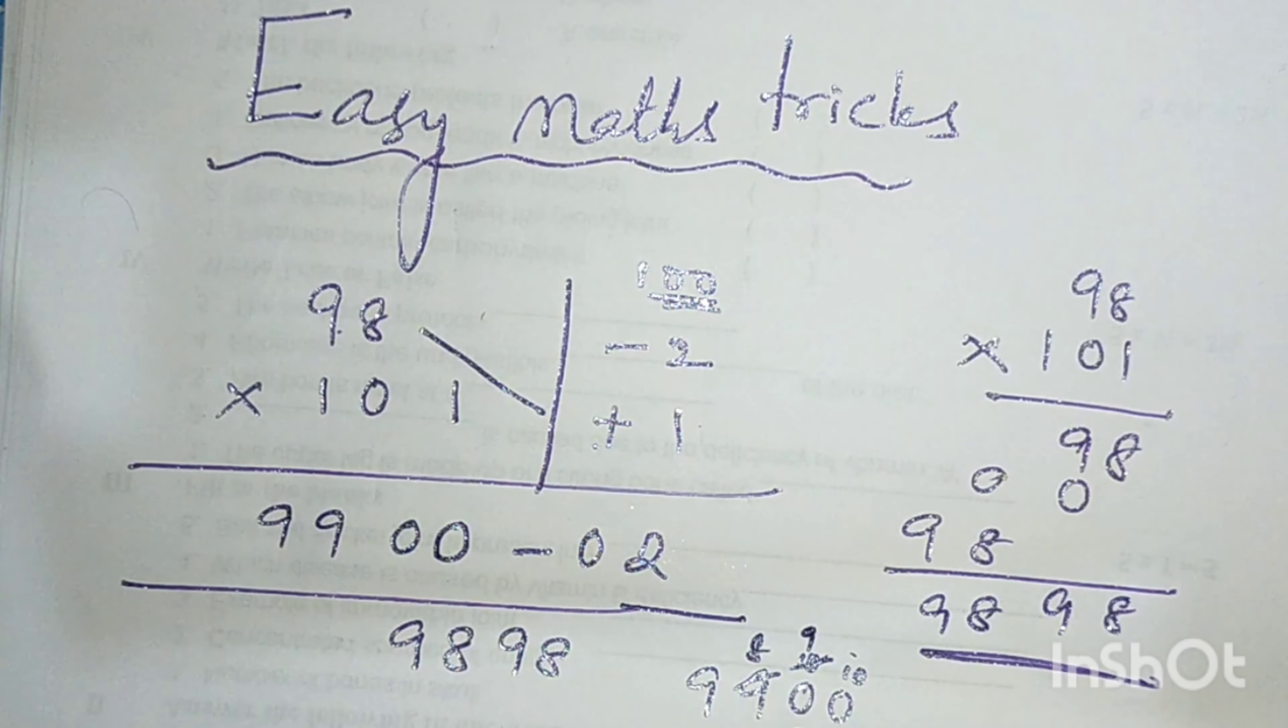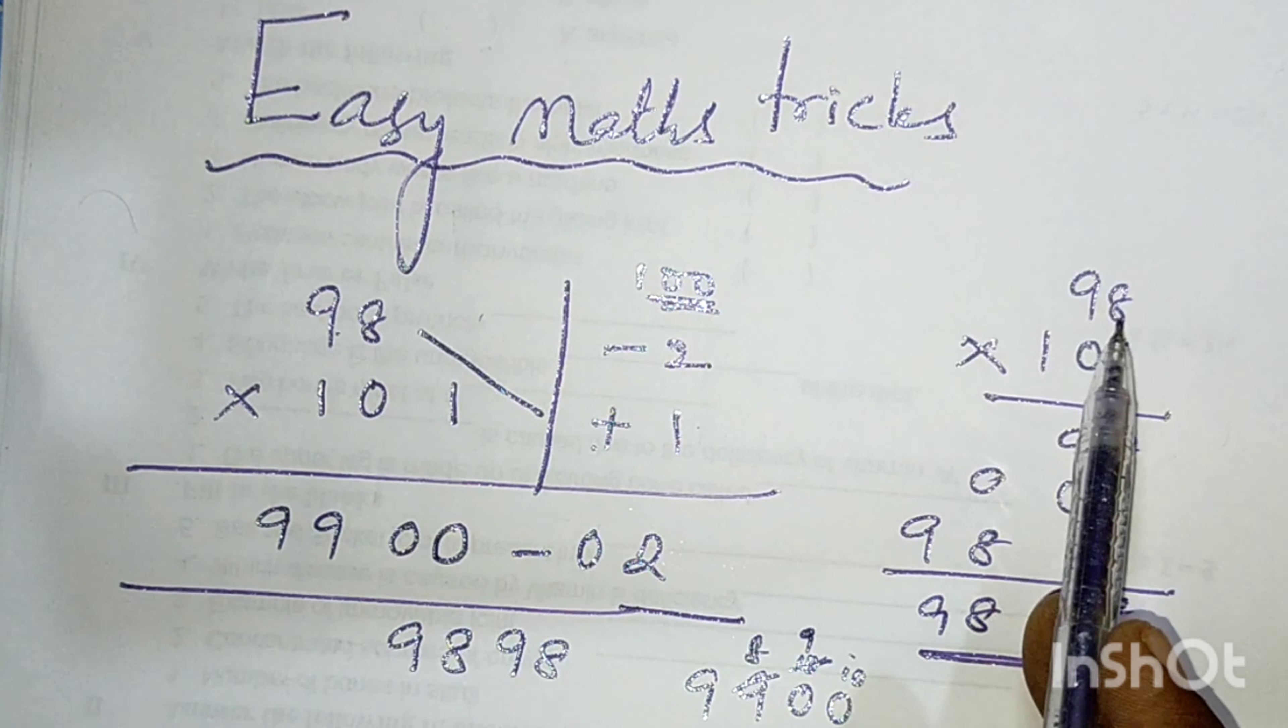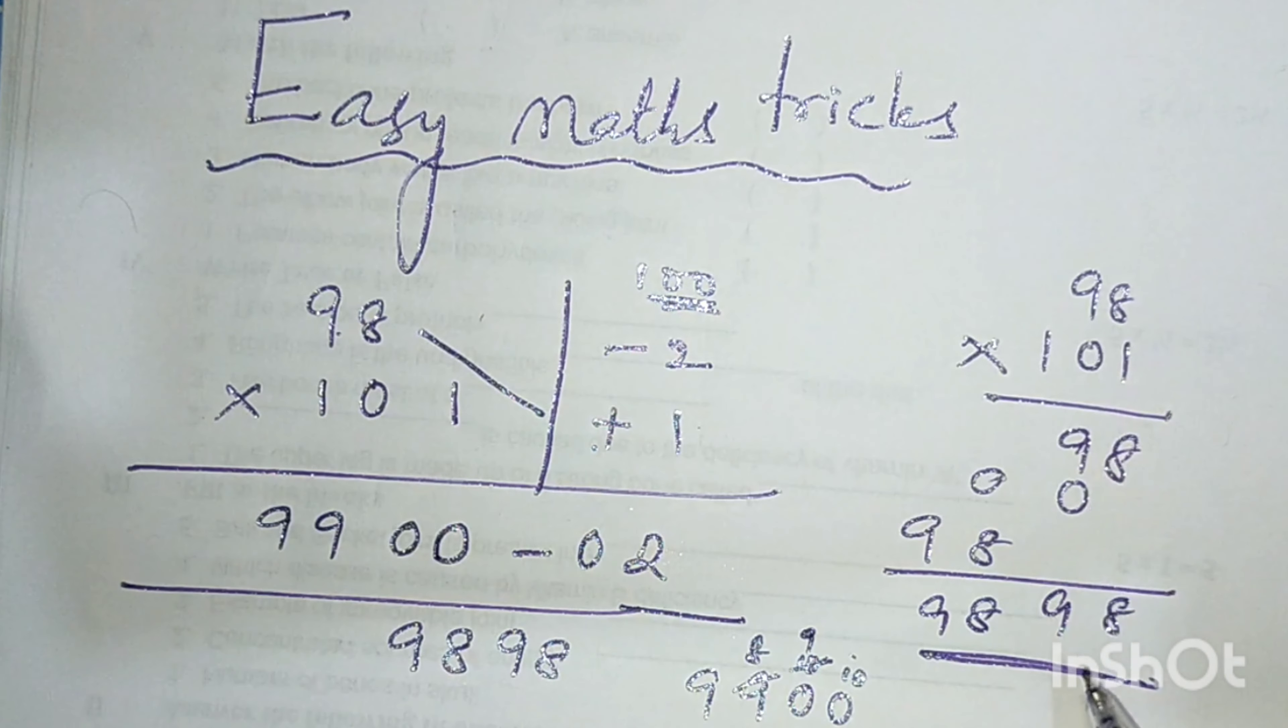Here we are taking one borrow that's why it become 9898. This is the way we have to solve. Even you collect normal calculation 98 into 101, it is also 9898. This is the way we solve this problem.